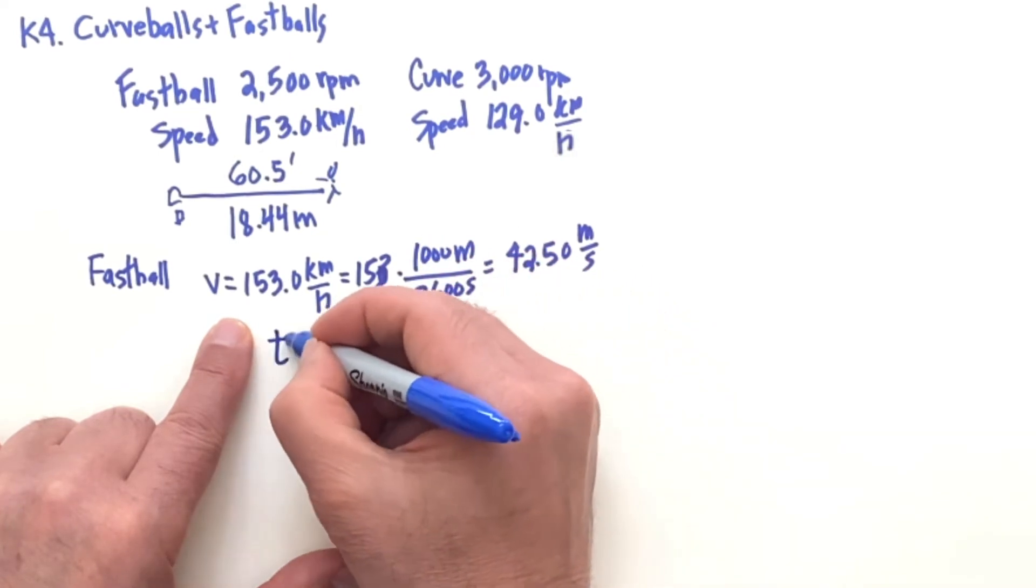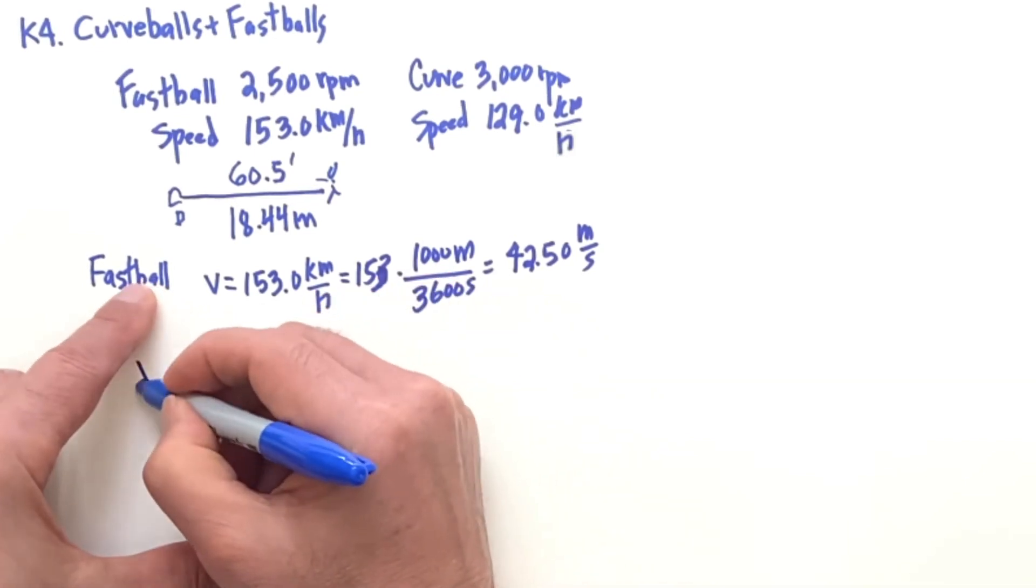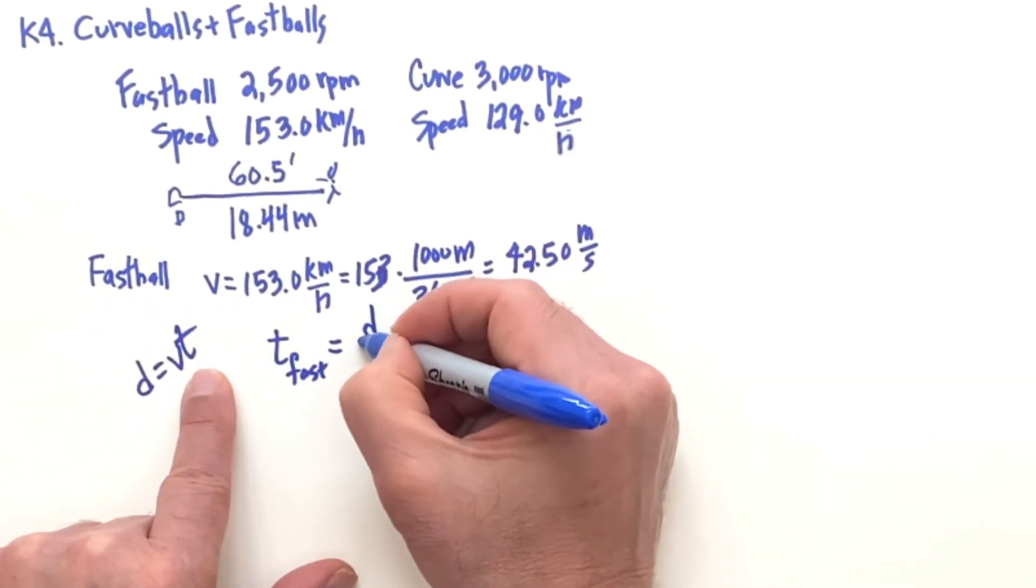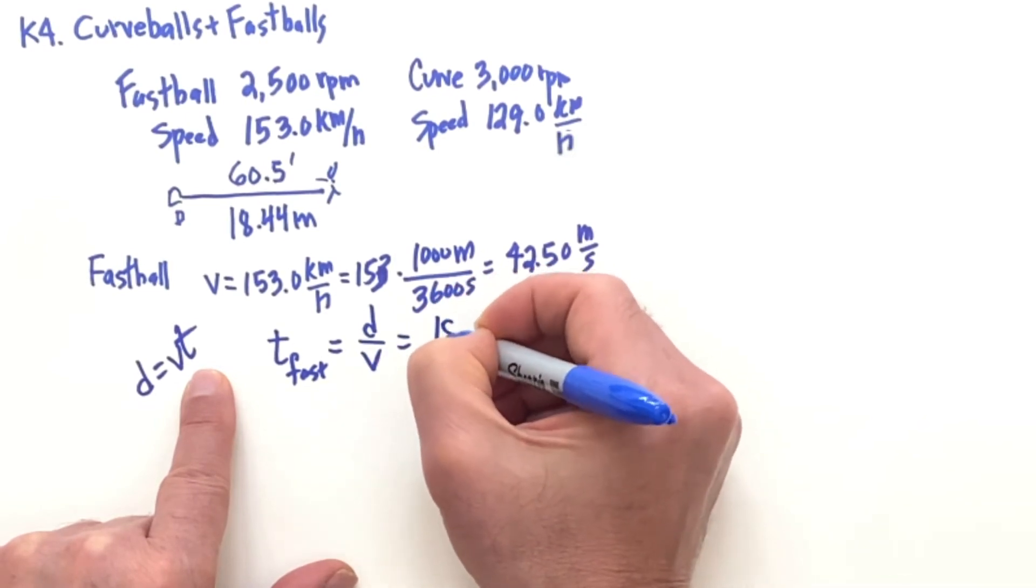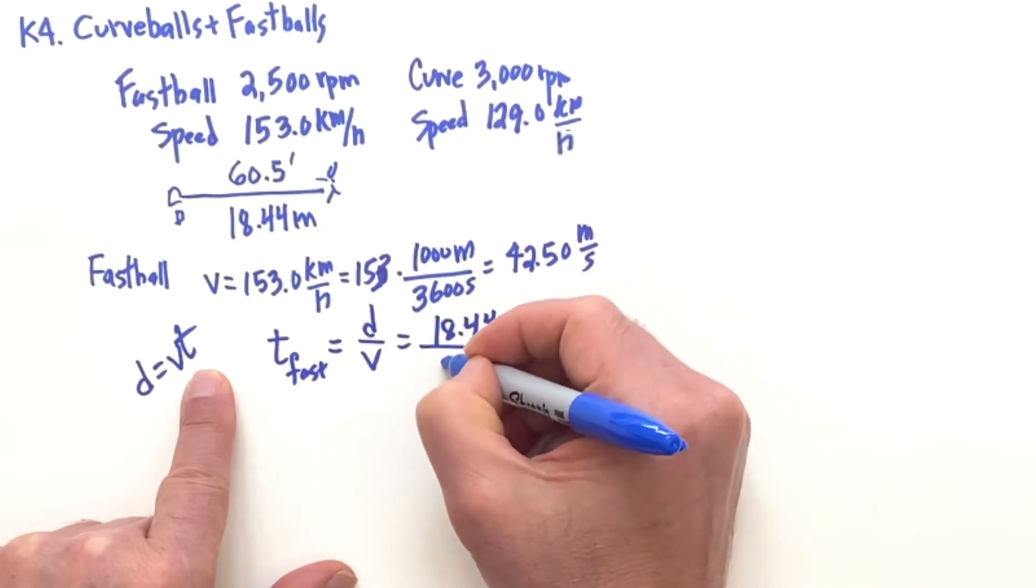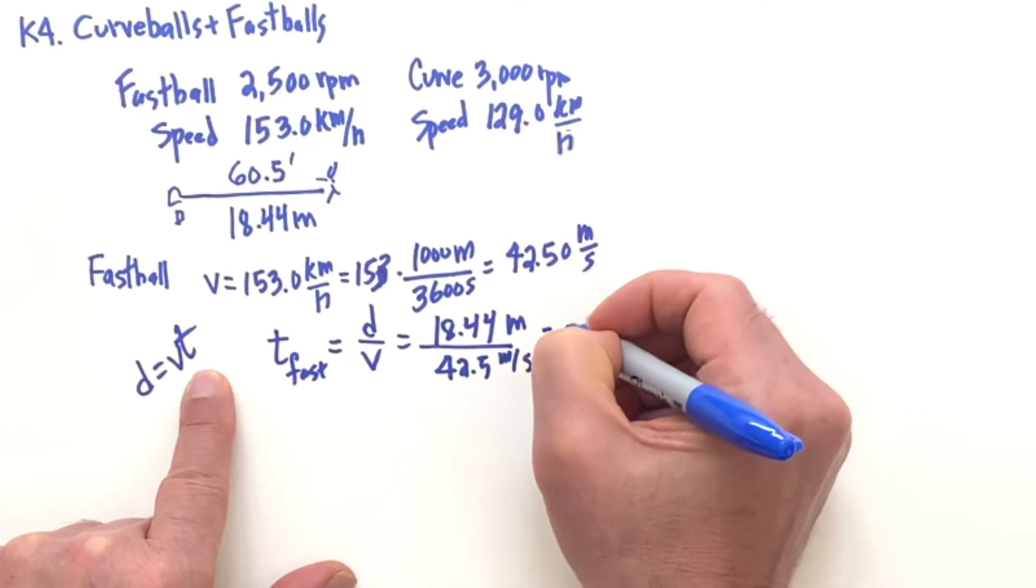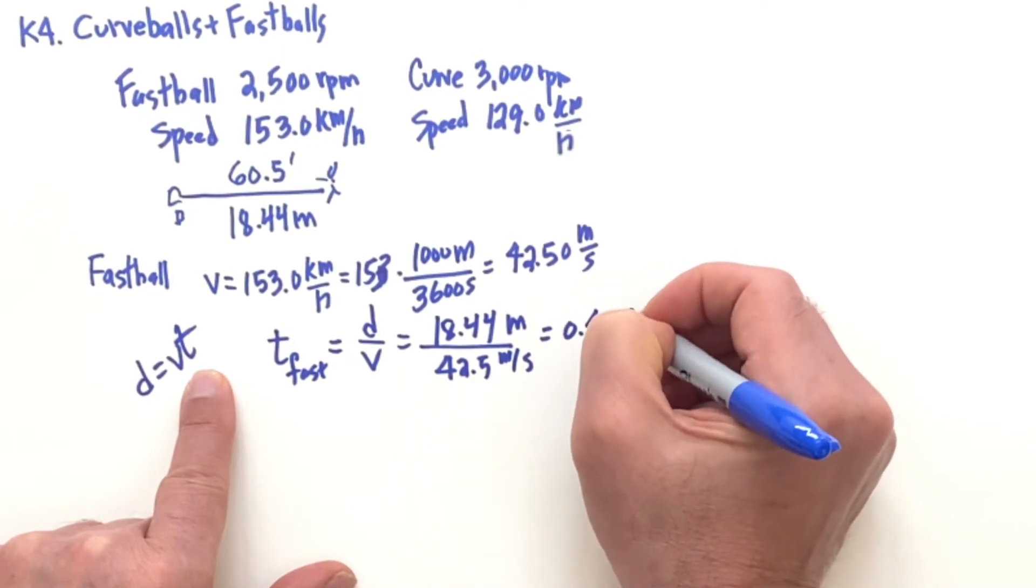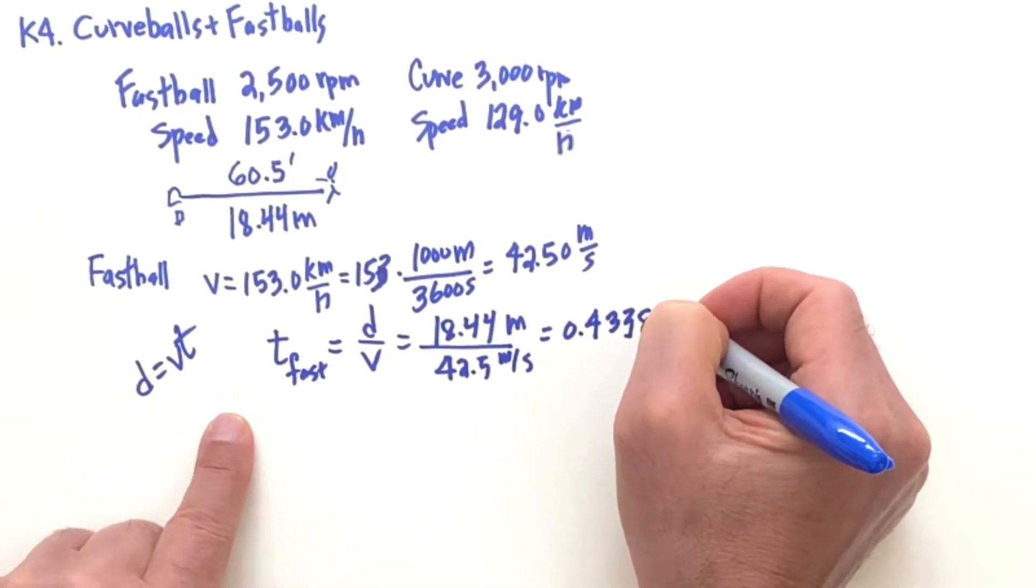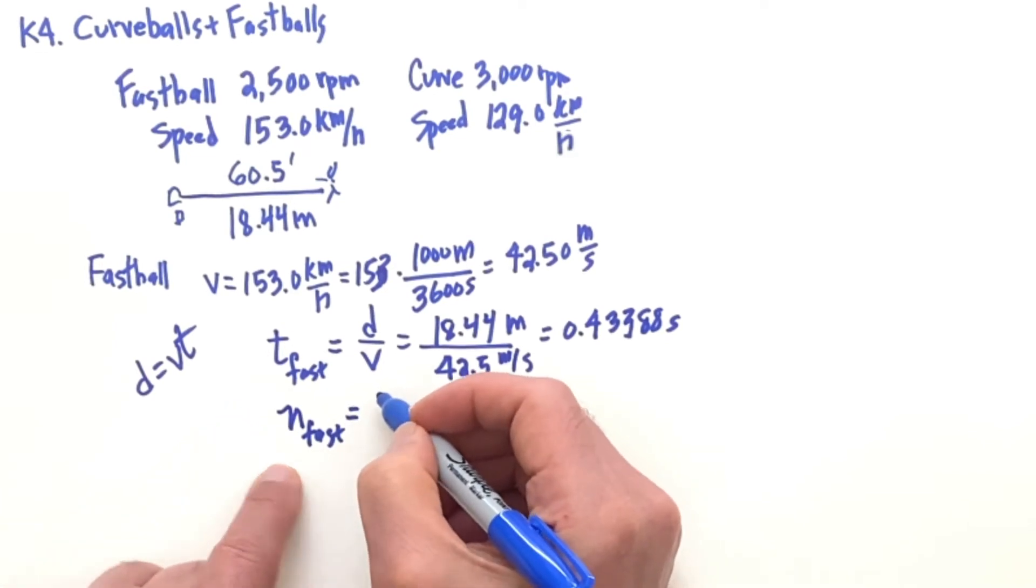And then here the time for the fastball to get to the plate, we use distance as velocity times time, so for the time you want the distance over the velocity. 18.44 meters over 42.5 meters per second is 0.433388 seconds. I always like to round off last.